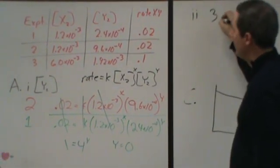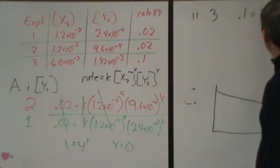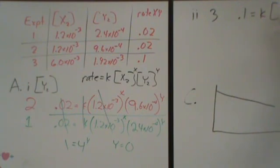So in experiment 3, I would have a rate of 0.1 equals k times this, 6 times 10 to the minus 3rd, to the x. So really, the y at this point doesn't matter. Anything I put in here is going to be raised to the 0 power. So that's really going to simplify down to 1.